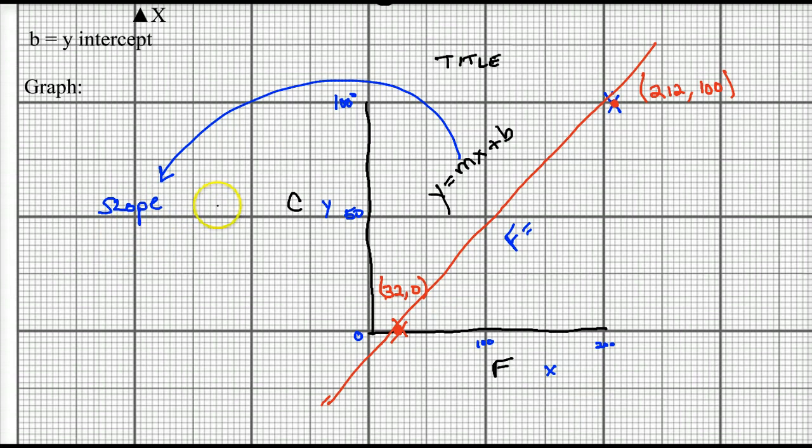Now, some people use rise over run. I'm big on the change of y over the change of x. So the change of y over the change of x means you're going to subtract the difference of your y values. And so you see your y values, of course, are your c's. So change of y over change of x.